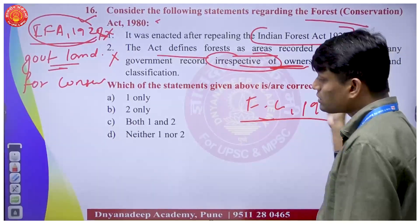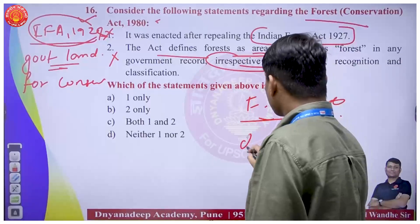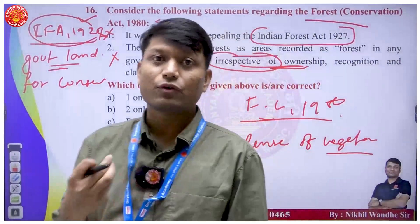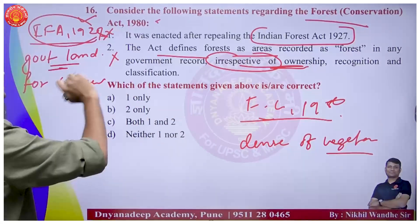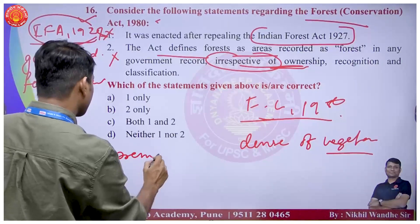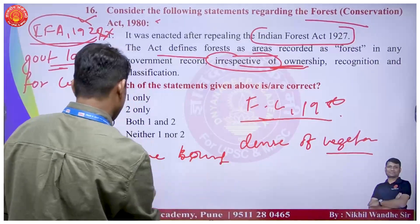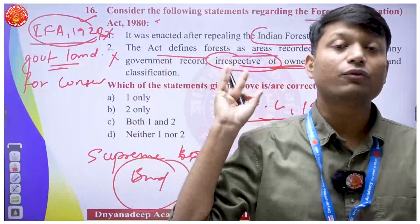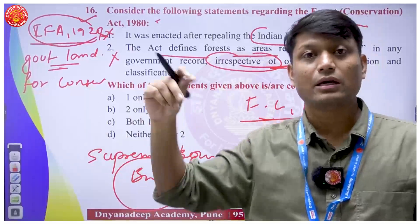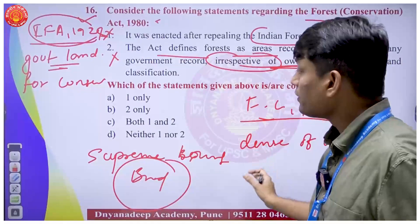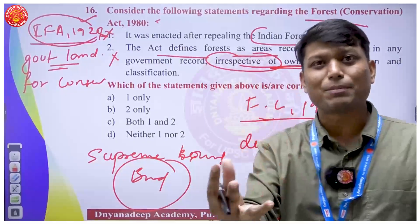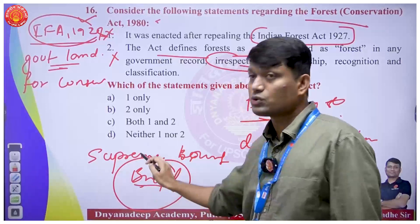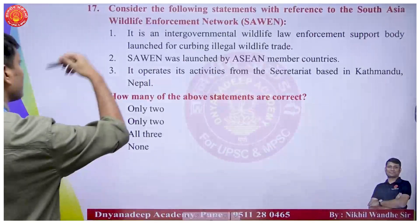As per the Indian Forest Act, forests are government land reserved for conservation. However, the Supreme Court gave a broader definition - wherever trees are planted and it looks like a forest, it should be called a forest, irrespective of government records. Regardless of whether something is recorded in a government record, if it appears to be a forest in general perception, it shall be called a forest.